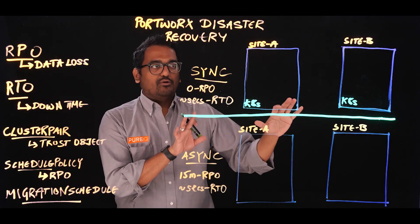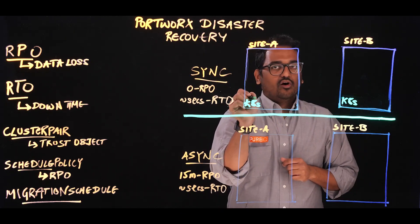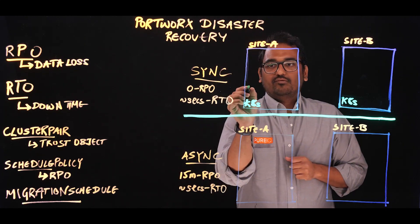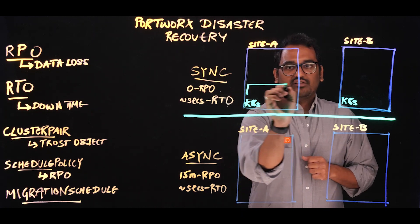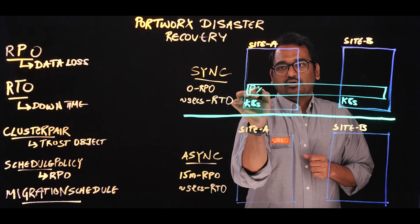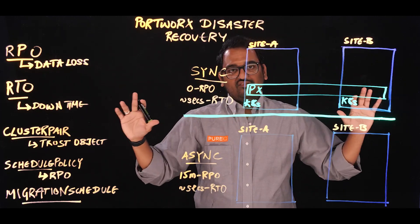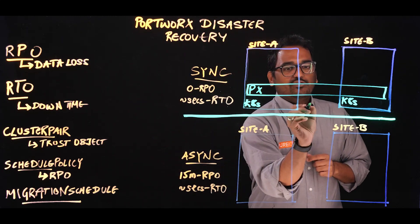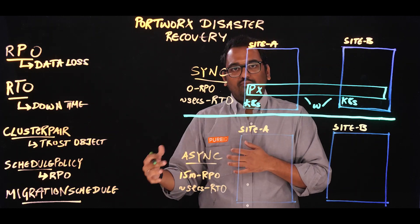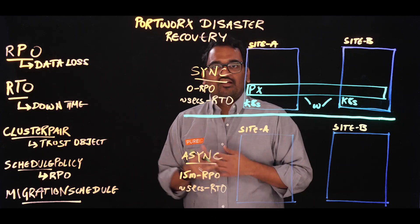Now let's talk about how we can build a synchronous disaster recovery solution using two Kubernetes clusters on site A and site B. To build this DR solution, we create a stretched Portworx storage cluster across site A and site B — two different Kubernetes clusters but one single Portworx storage cluster. You also have a witness node that helps you maintain quorum and acts as the deciding factor when a split-brain scenario happens or when your primary site goes down.